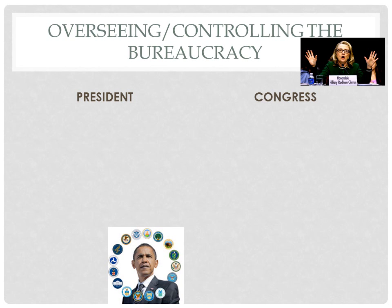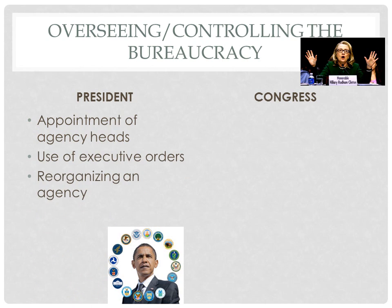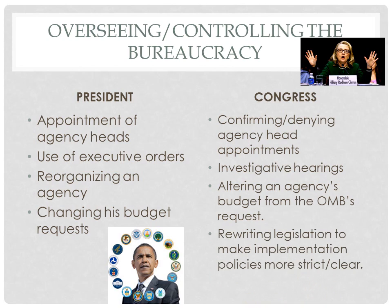Although bureaucracy exercises a great deal of independence in policy implementation, methods are built in place to allow both the President and Congress to oversee their activities. The President can appoint agency heads, use executive orders to make members comply with his requests, reorganize an agency he believes is not working effectively, or change his budget requests based on agency performance. In terms of congressional or legislative oversight, Congress can confirm or deny appointments to agency head positions, hold investigative hearings to expose corruption, alter an agency's budget requests, and go back and rewrite a law they believe they left too open for interpretation to make implementation policies more strict and clear.